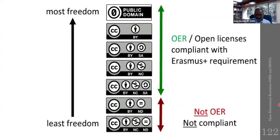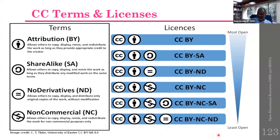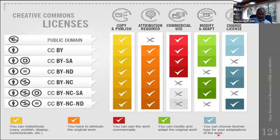Starting from CC BY, which gives more freedom to make content accessible and reusable, to the more restrictive CC BY NC ND, which limits some freedoms and misuses. CC BY allows others to copy, display, remix, and redistribute the work as long as they provide appropriate credit to the creator. These describe the different facilities and freedoms granted under different Creative Commons rights.